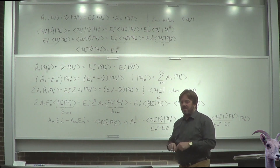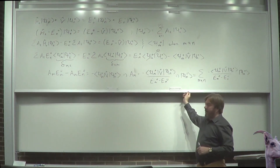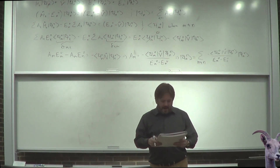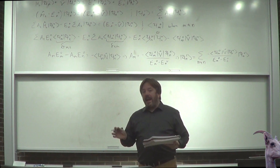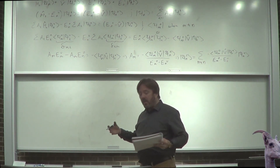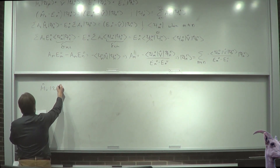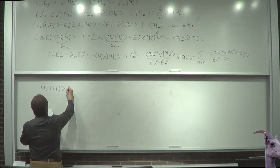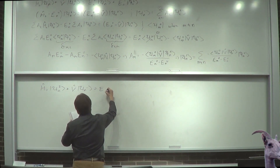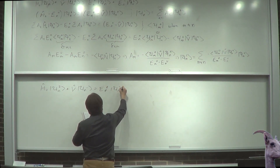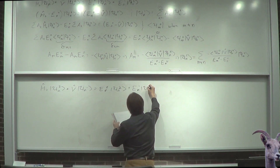Now let's do the second-order energy correction — that was all first order. Going back to the expansion we had earlier: when you group all the lambda terms together and those lambdas all drop out, you read all this language about letting lambda vary from 0 to 1, yet it never actually matters. There's a pattern in the orders: lambda^0, lambda^1, lambda^2, and so on.